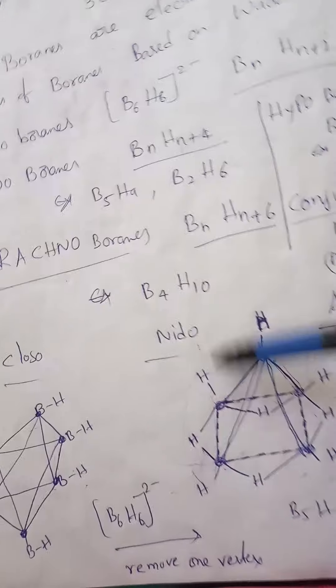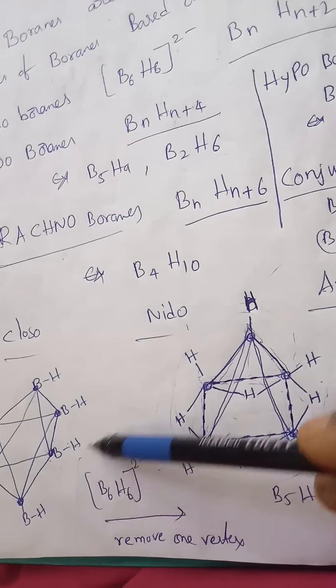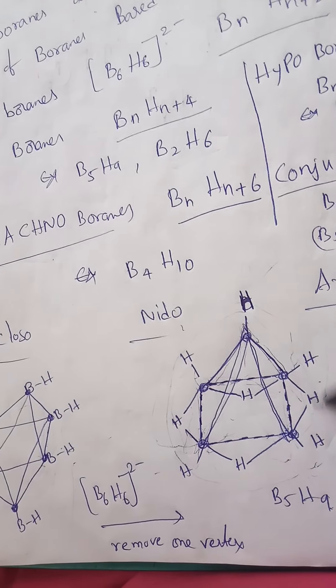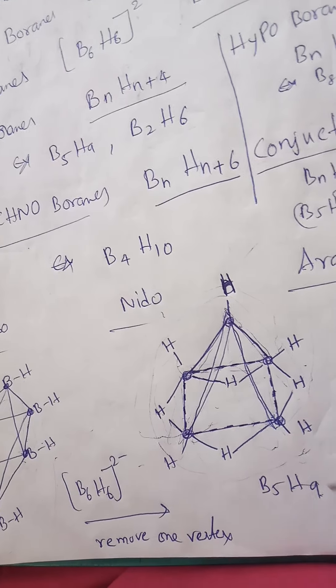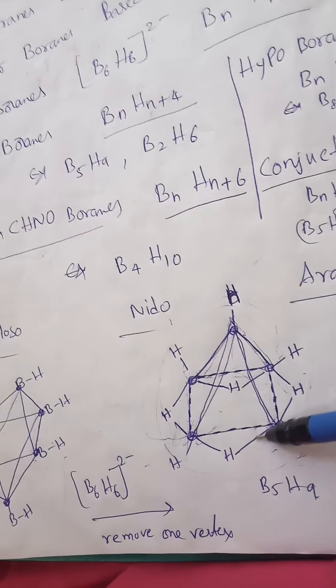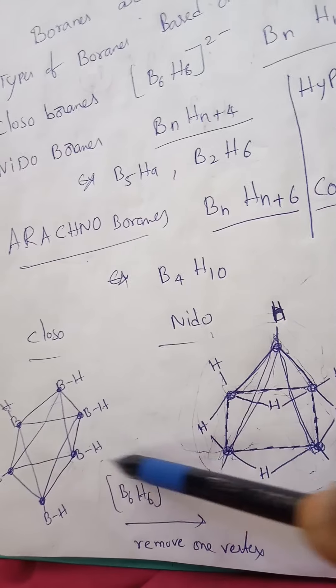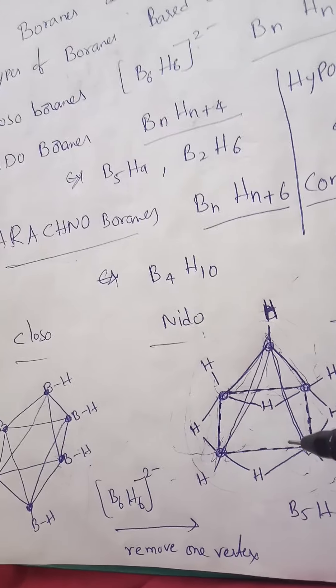Nido-borane means we remove one of the vertices of the particular closo-borane to get a nido-borane. A well-known example is B5H9. So we remove one of these vertices and get the same resultant structure. This is called nido-borane.